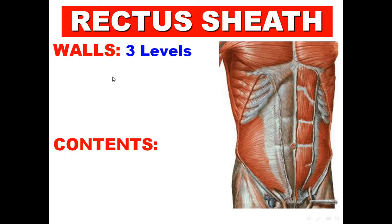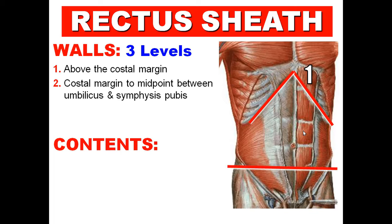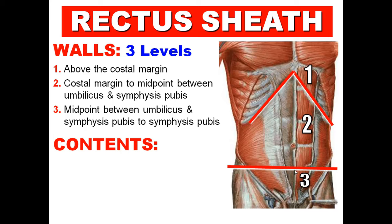Regarding the walls, the rectus sheath is divided into three levels. Level 1 is above the costal margin. Level 2 is above the arcuate line, between the costal margin and the midpoint between the umbilicus and the pubic symphysis. Level 3 is below the arcuate line, between that midpoint and the pubic symphysis.